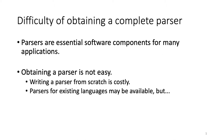The motivation of our research is to address the difficulty of obtaining a parser. Parsers are essential software components for many applications. Not only compilers or interpreters, but also program analysis tools or program converters use a parser. But obtaining a parser is not easy — writing a parser from scratch is costly in general. Even if we use a parser generator, we must write many rules to obtain the generated parser. Parsers for existing languages may be available, but they are not always useful for your application. The parser may be written in a language that you don't want to use, or the resulting AST or parse tree may not be what you want.